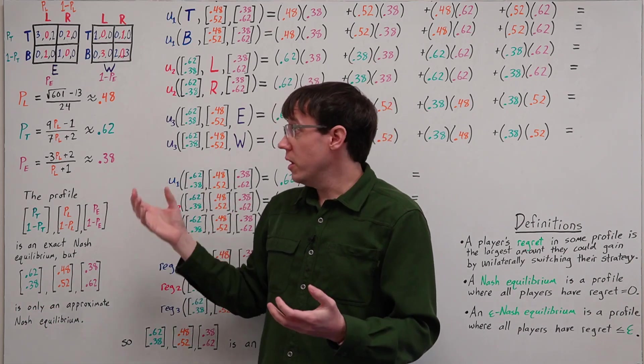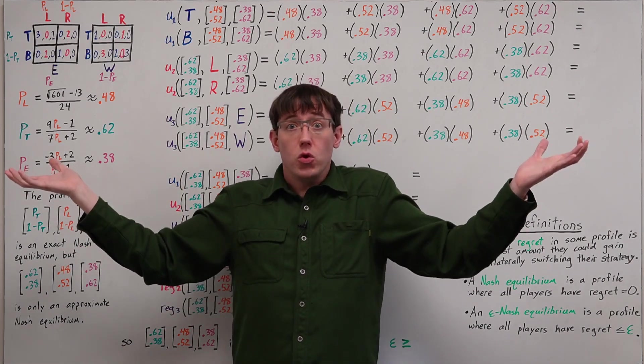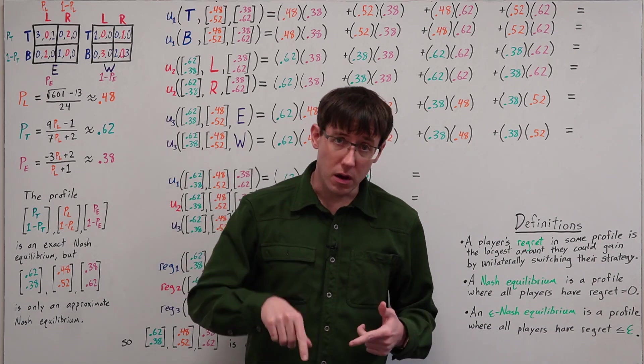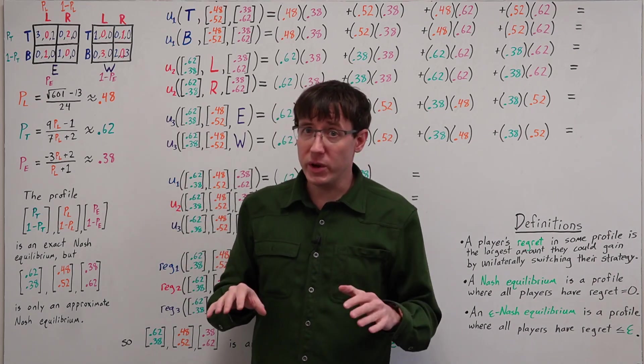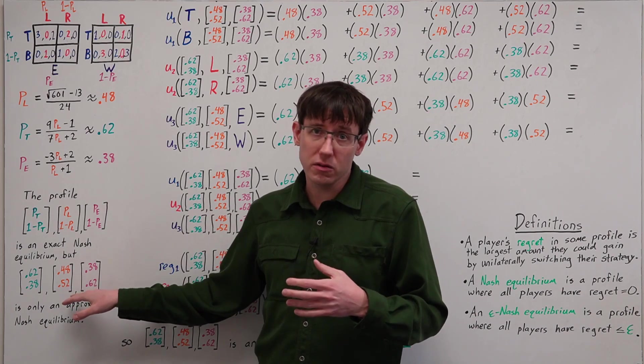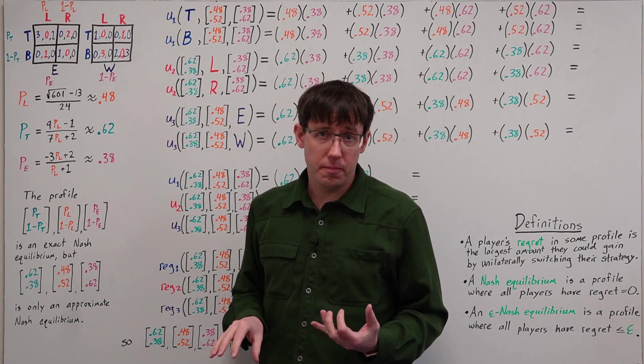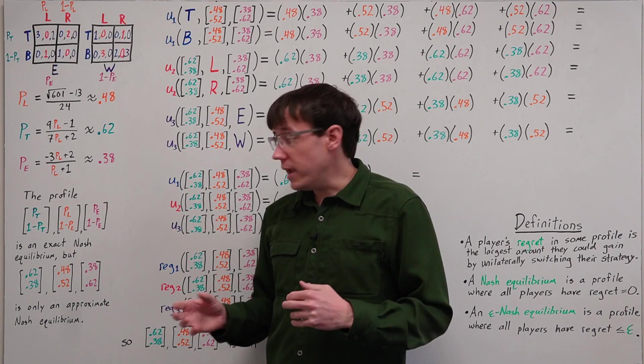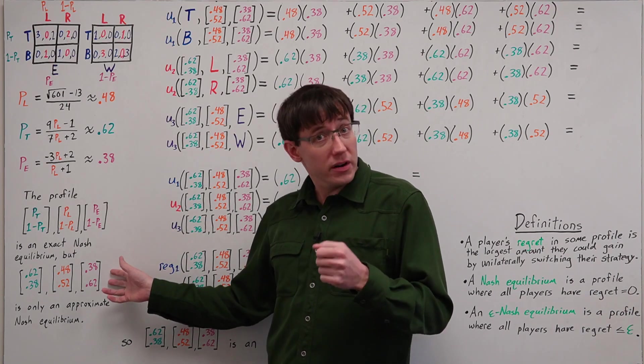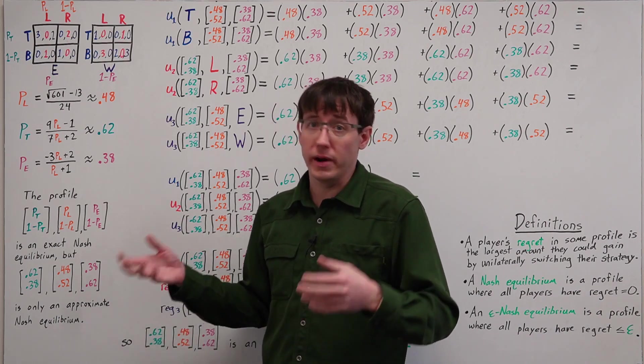So if we want to numerically compute Nash equilibria, what can we do? Well, now we know that whatever method we use, if it gives us back floating point probabilities, the answer we get may be only an approximation, which means we need some way to measure that approximation and say how close to a Nash equilibrium we got.